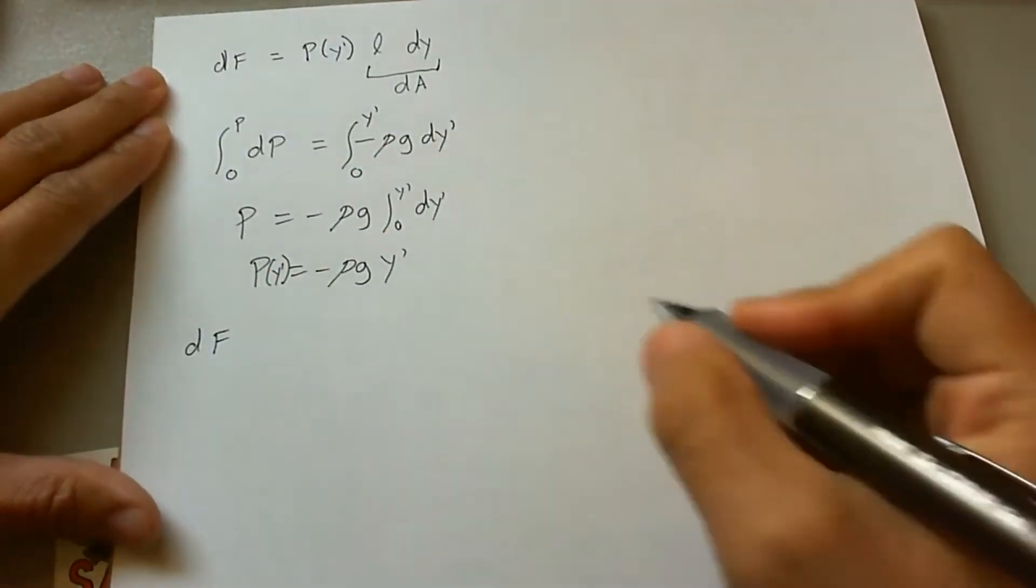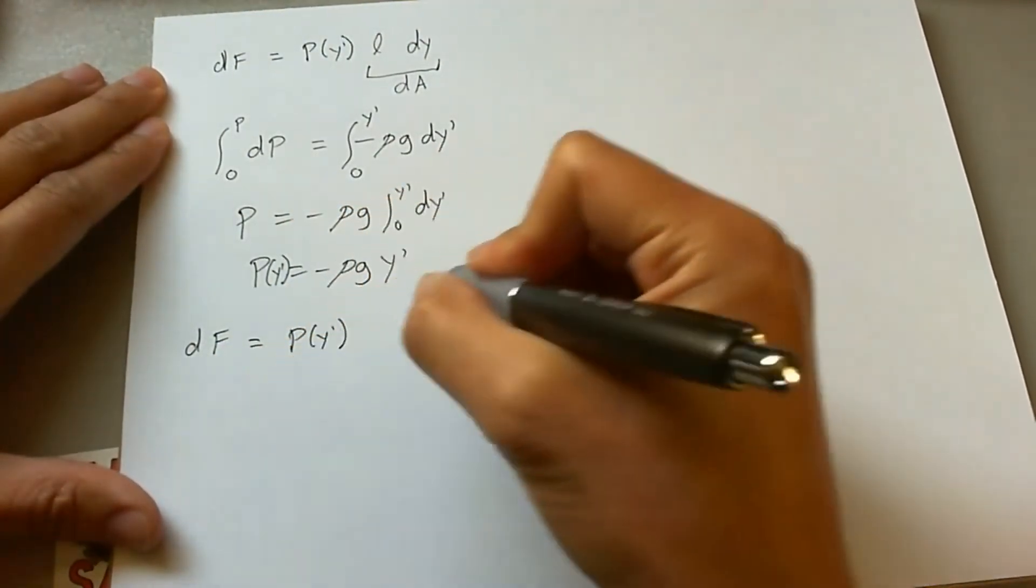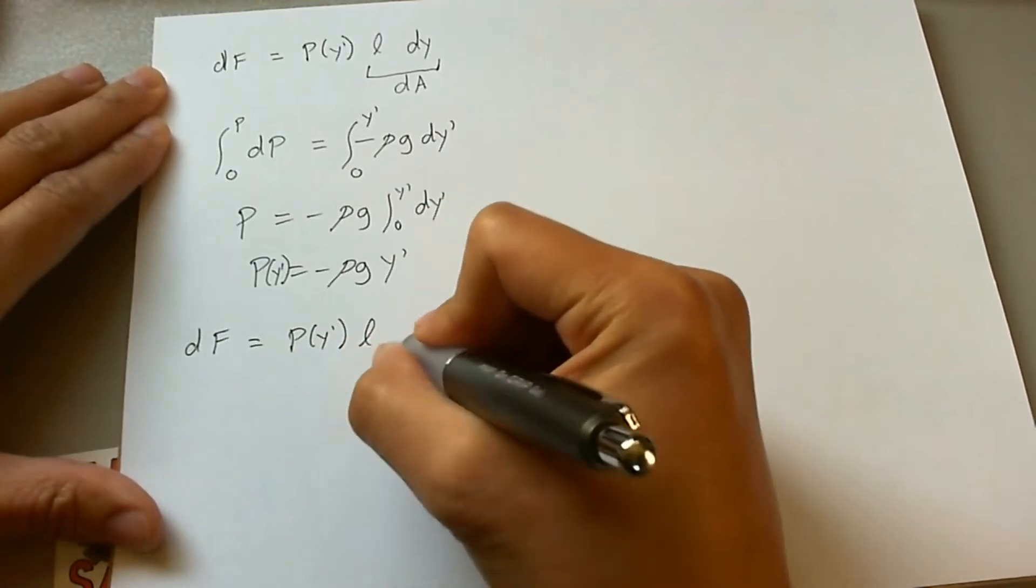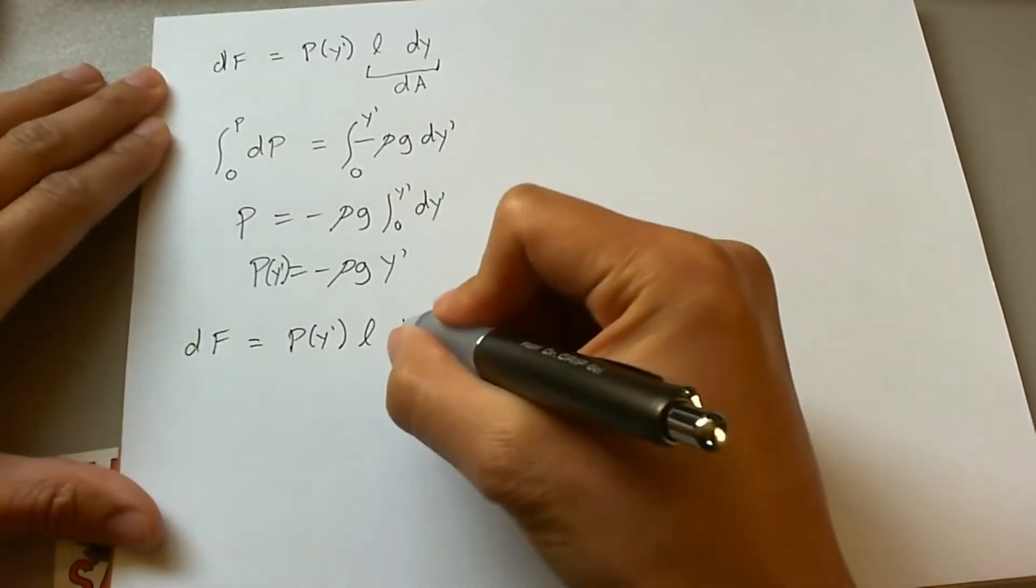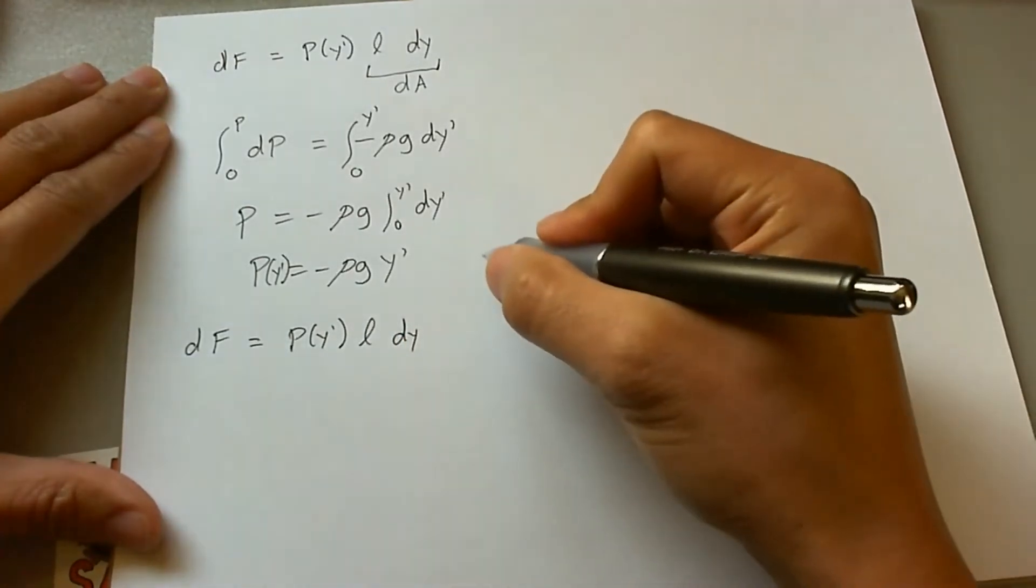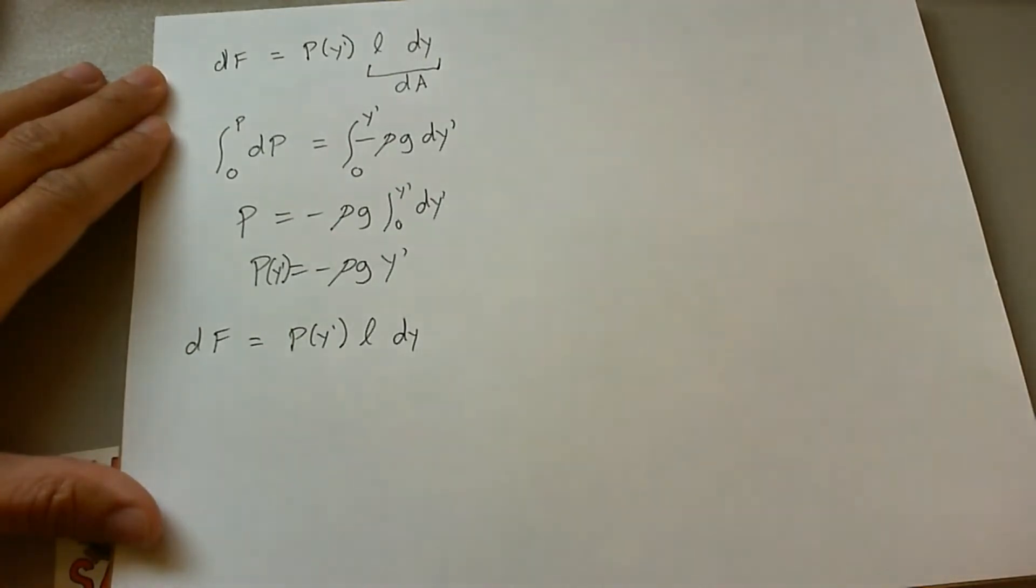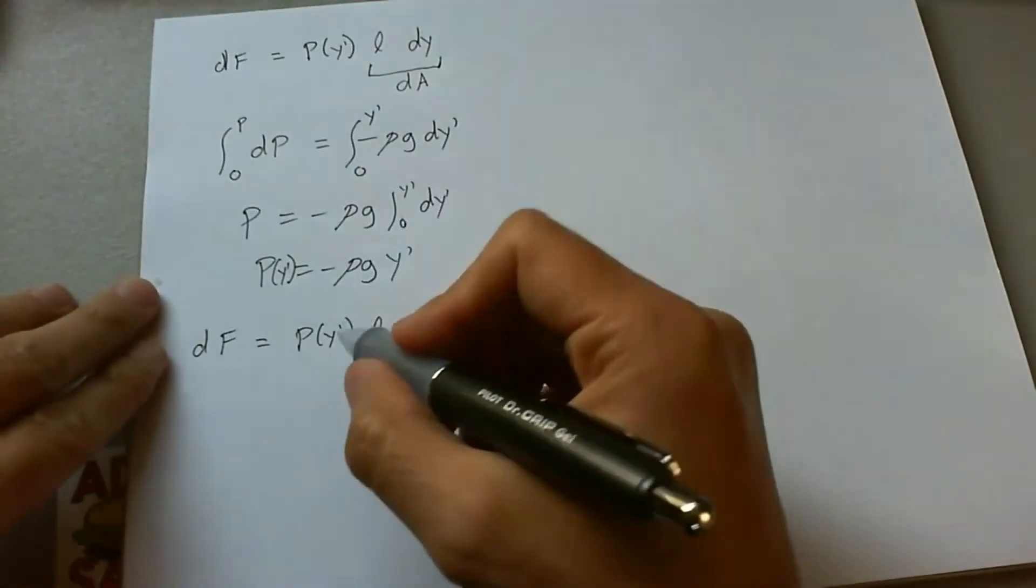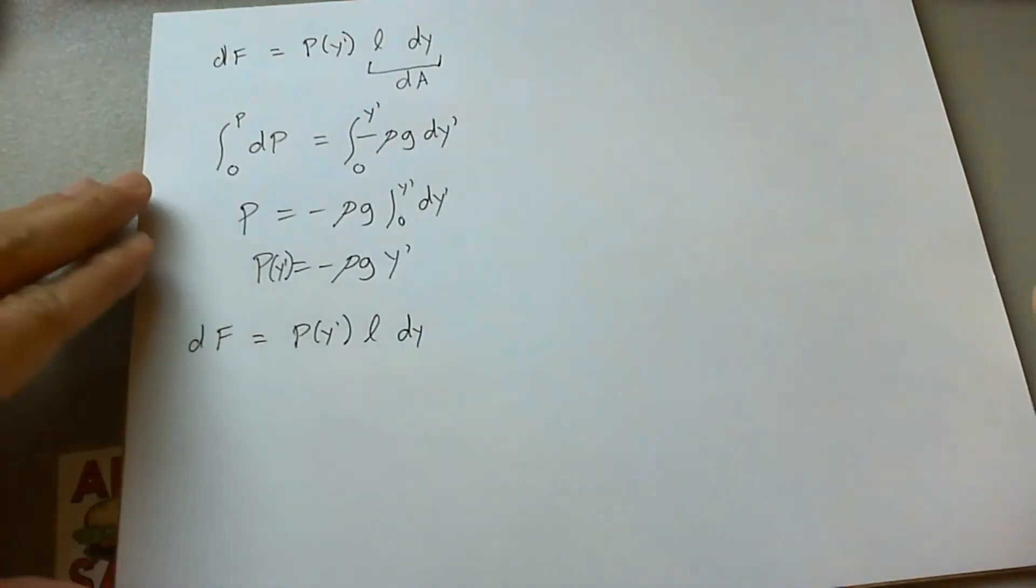So an infinitesimal piece of the force is going to be the pressure at a particular spot, multiplied by length of the window at a certain depth, multiplied by a little tiny area height-wise below the water. Now to try to relate y' and dy. So this takes just a little bit of thought here.